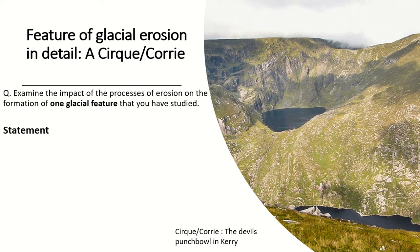We must start off with our opening statement. Your opening statement is typically naming a feature of glacial erosion — for example, 'A feature of glacial erosion I have studied is a corrie/cirque.' This is your armchair-shaped hollow in the mountain — it can be called either name. We must also be able to give an example. A famous example in Ireland is the Devil's Punch Bowl in County Kerry.